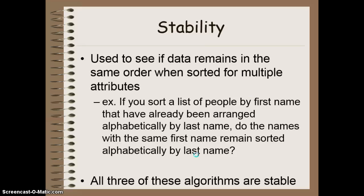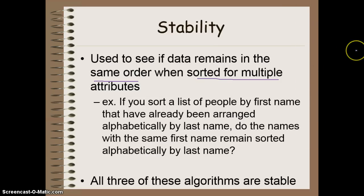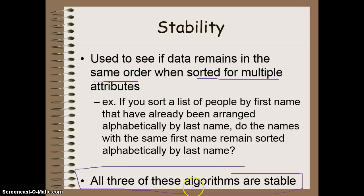Finally, we look at the stability of our sorting algorithm — we want to see if the data remains in the same order when we sort for multiple attributes. For example, if you sort a list of people by first name, but you've already arranged them by last name, will people with the same first name still show up in the correct order based on their last name? If the last name stays sorted even after sorting for first name, then it's stable. All three of these algorithms are stable. This is something you can sacrifice for a more efficient method, but it would no longer be stable.